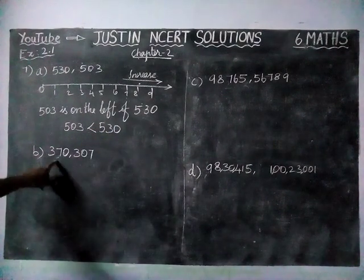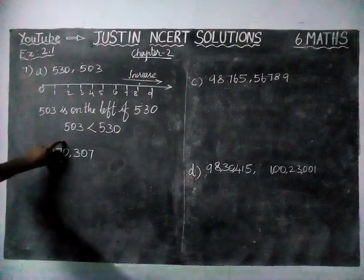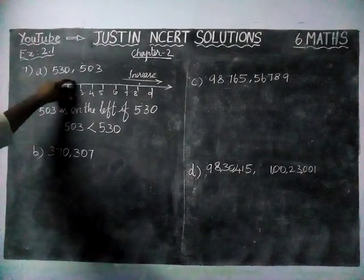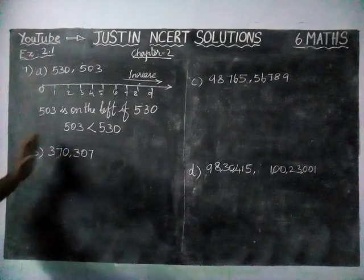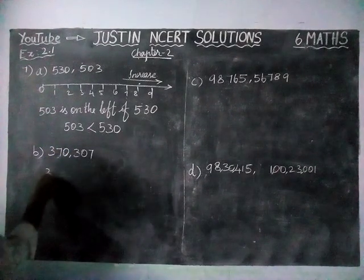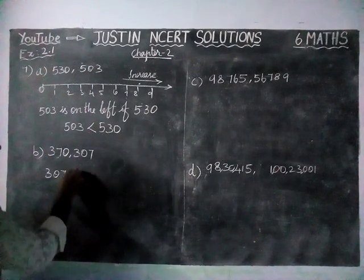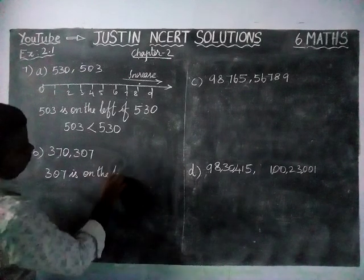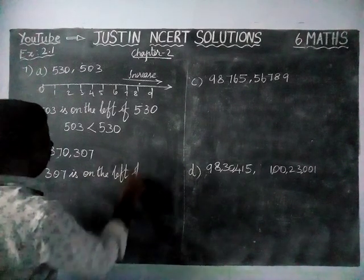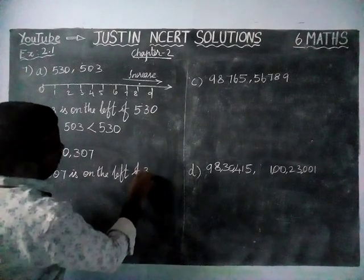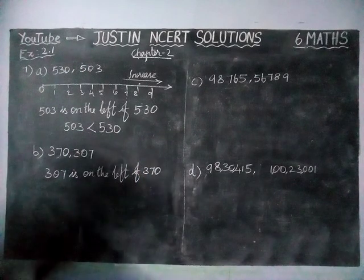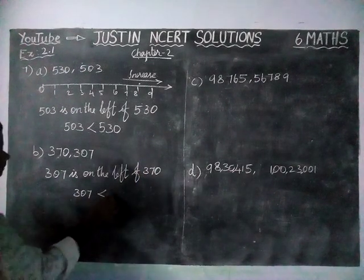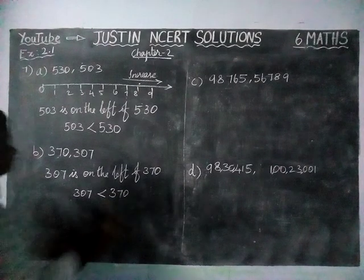Next, option B — same concept. This is 370 and 307. On the number line, 307 will come on the left hand side. So 307 is on the left of 370, and using the sign: 307 is less than 370.